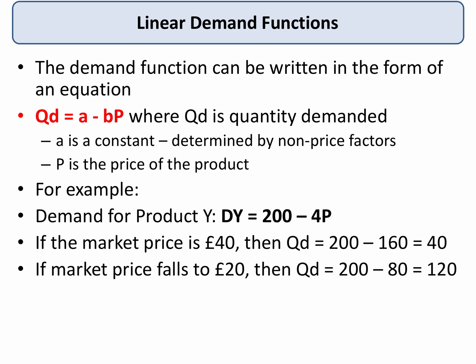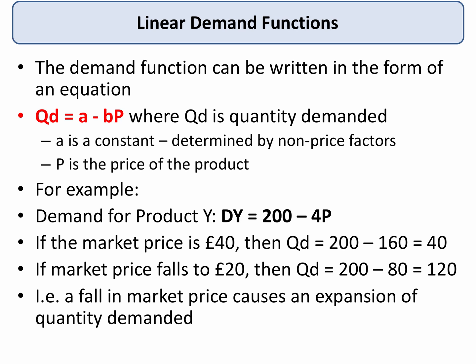However, if the market price of Y falls — other factors remaining the same — keeping our demand function in the same format, quantity demanded will be 200 minus 4 times 20, which is 80, giving 120. In other words, a fall in the market price causes an expansion of quantity demanded.